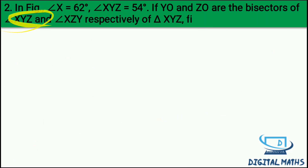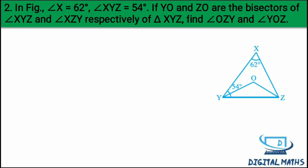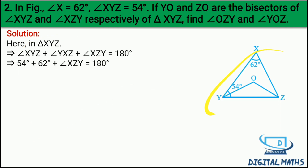Question 2: In the figure, angle X = 62 degree, angle XYZ = 54 degree. YO and ZO are the bisectors of angle XYZ and angle XZY respectively. YO dikhaa raha hai angle XYZ ka bisector hai - bisector matlab 54 ko do equal parts mein divide kar raha hai: 27 and 27. Aur ZO, angle XZY ko do equal parts mein divide kar raha hai. Find angle OZY and angle YOZ.